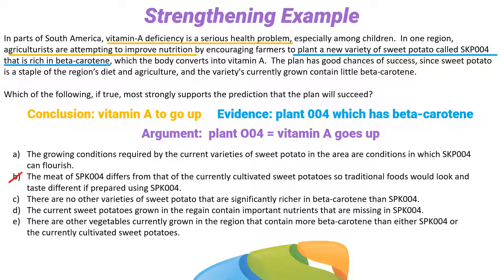Answer choice C is sneaky and a pretty common trap. Our argument is concerned only with 004 increasing vitamin A in the region — the argument is very narrow and very specific. Do we care about other varieties of sweet potato? We do not. C is out of scope.